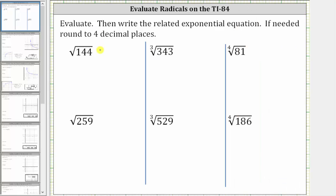The reason the square root of 144 is 12 is because 12 squared is equal to 144. Remember, for a square root, the index is two.